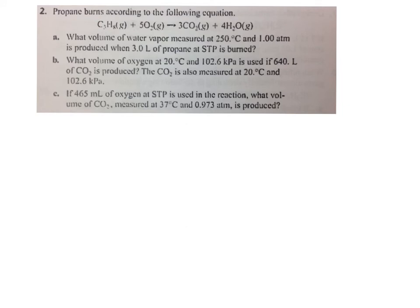So for C, it's asking if 465 milliliters of oxygen at STP is used in the reaction, what volume of CO2 measured at 37 degrees Celsius and 0.973 atmospheres is produced? So the first thing I would do is take note of what units they gave us. They gave us a temperature, a pressure, and STP. And good news, STP is both a temperature and a pressure. So we have sets of both. We have a volume that's in milliliters. We can keep it in milliliters, but just because the ideal gas law states we want it in liters, I'm going to convert it quickly to liters. It's just 0.465 liters of oxygen.